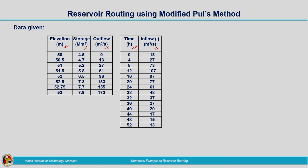In the question it is given that this inflow hydrograph is entering the reservoir when the elevation is at 51 meters, with a corresponding outflow of 27 meter cube per second. The reservoir was in a steady condition until the flood entered. Now we will proceed to solve the example.